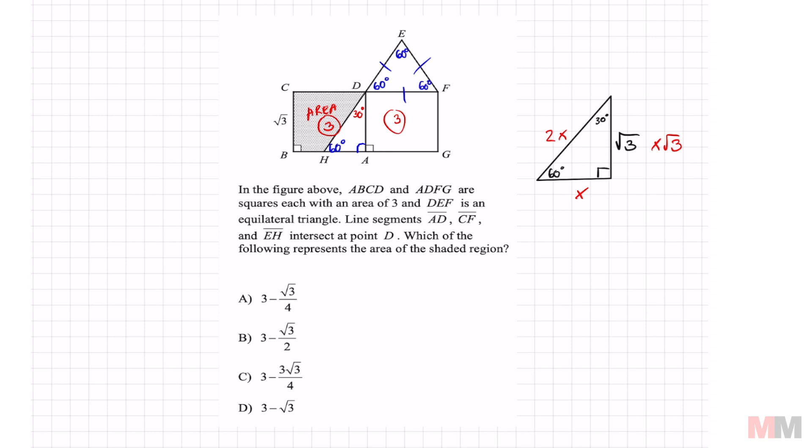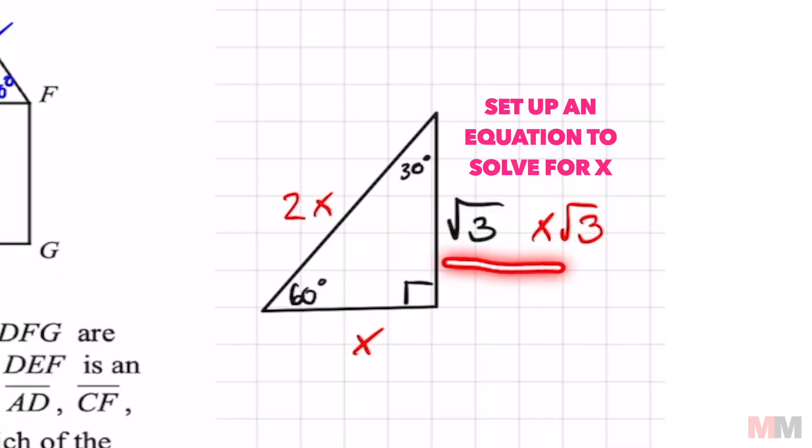So how do I do that? How do I solve for x? I can set these two right here equal to each other, solve for x, which is just one step, divide by √3. And now we'll get x.